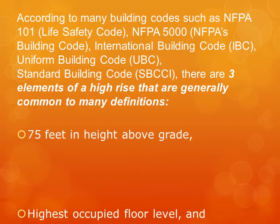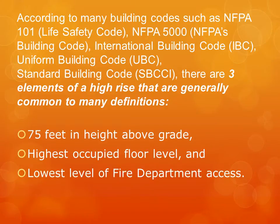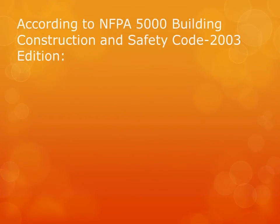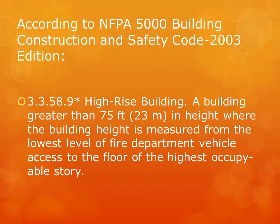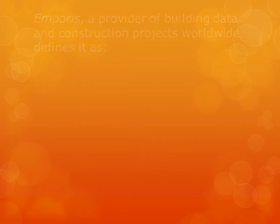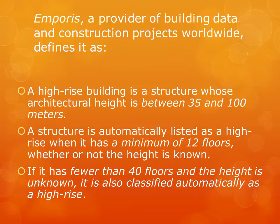Those three elements are: 75 feet in height above grade, highest occupied floor level, and the lowest level of fire department access. According to NFPA 5000, 2003 edition, a high-rise building is a building greater than 75 feet in height, where the height is measured from the lowest level of fire department vehicle access to the floor of the highest occupiable story. Emporis, a provider of building data worldwide, defines high-rise as a structure whose architectural height is between 35 and 100 meters. A structure is automatically listed as high-rise when it has a minimum of 12 floors, whether or not the height is known.